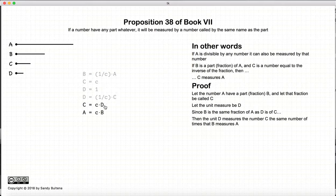So in that case, D measures C the same number of times that B measures A.